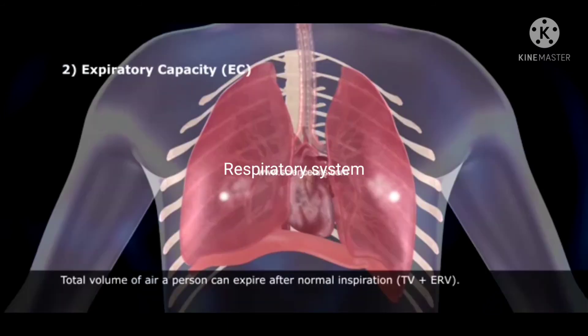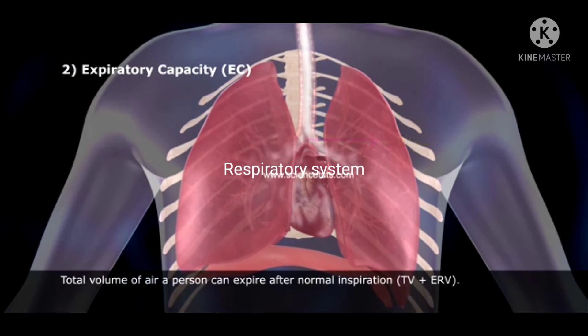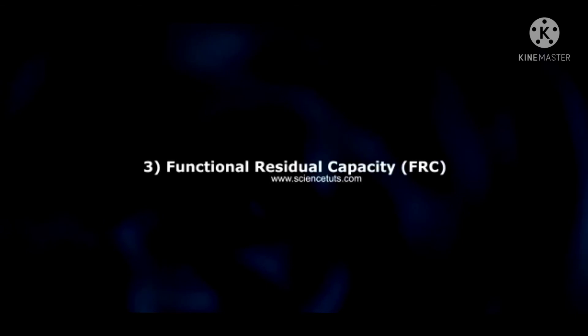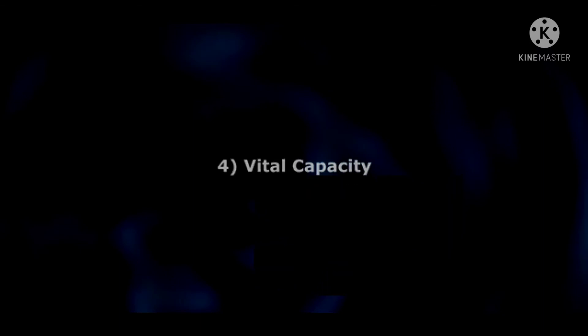Next is expiratory capacity, which is the total volume of air a person can expire after normal expiration — TV plus ERV. After that is functional residual capacity, which is the volume of air that remains in the lungs after normal expiration, approximately 2,400 ml. This includes ERV plus RV, giving 2,400 ml of air.